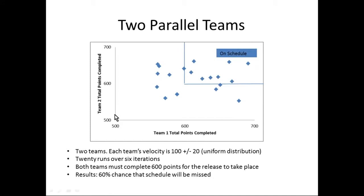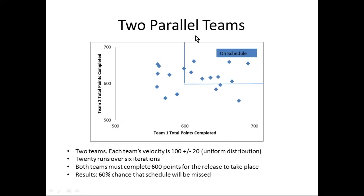Looking at this scatter chart, we're plotting Monte Carlo results for Team 1 and Team 2. On the x-axis is how many points Team 1 actually completes — mostly centered around 600 but sometimes below, sometimes above. Whenever a team is below 600, we've missed the release — that's the cut line. To the right we hit the release; to the left we don't. The same goes for Team 2. The only time we can actually release is in the upper right-hand quadrant, and counting those situations there are only 8 out of 20 — a 40% chance of hitting schedule and a 60% chance of missing it.